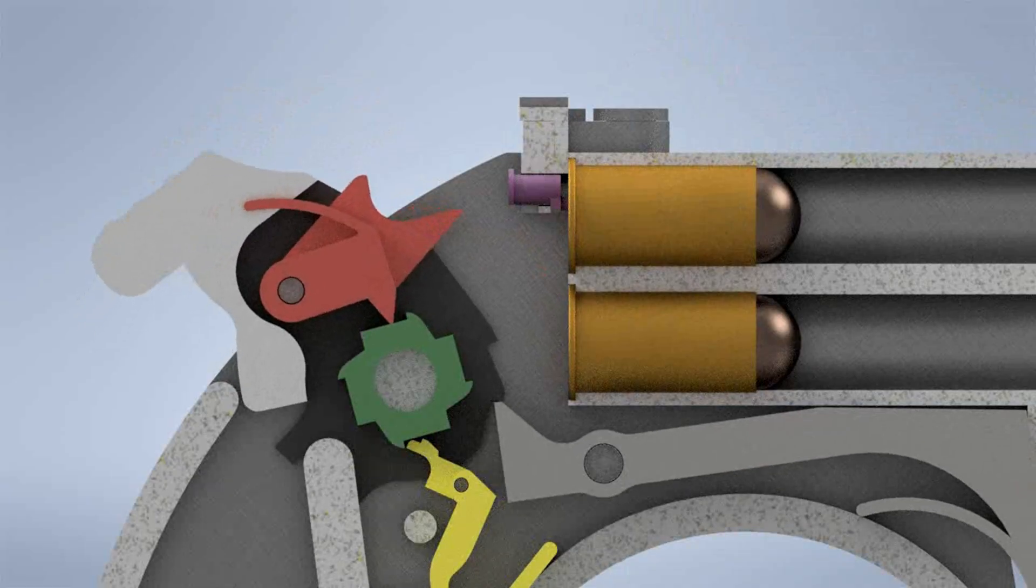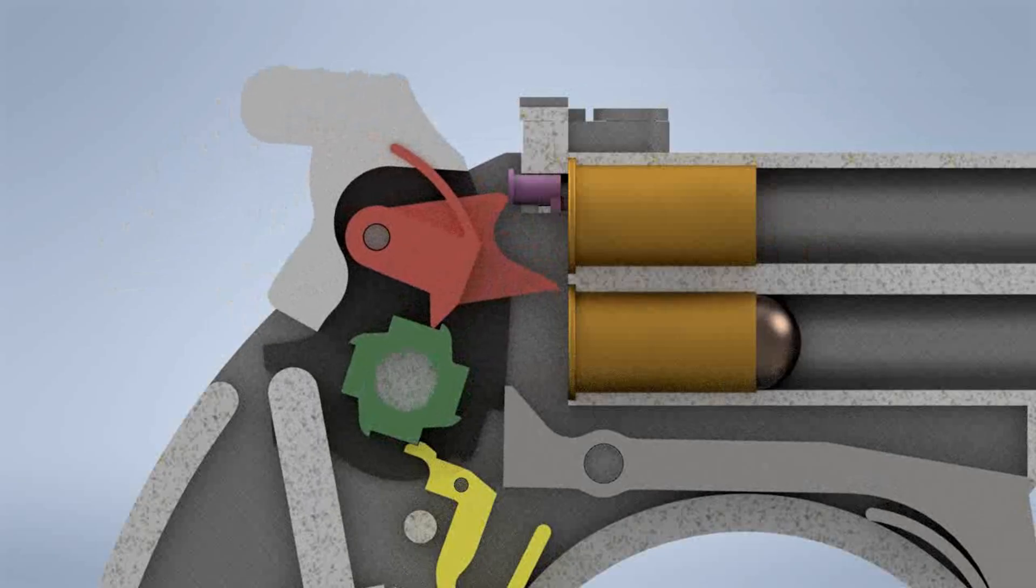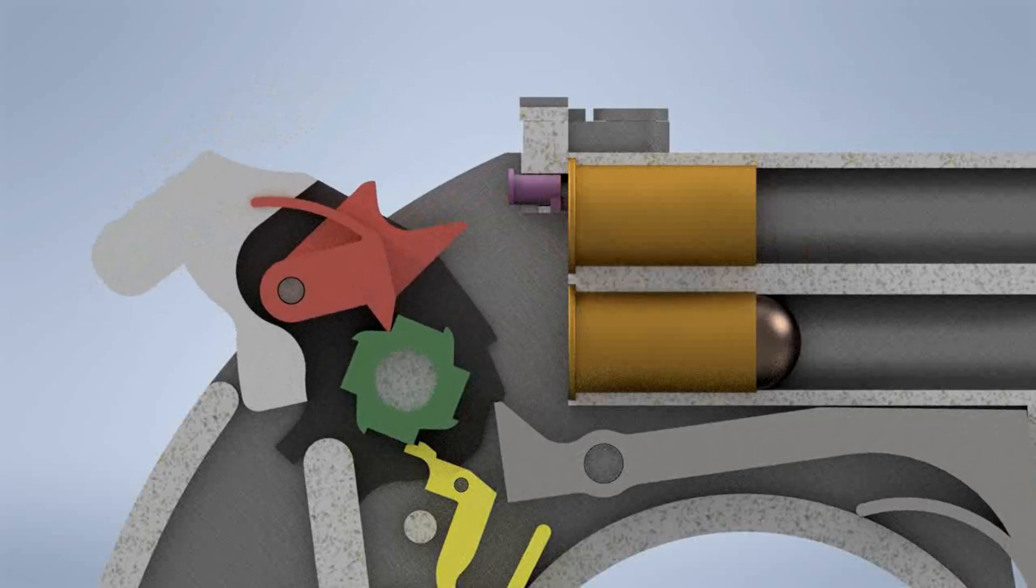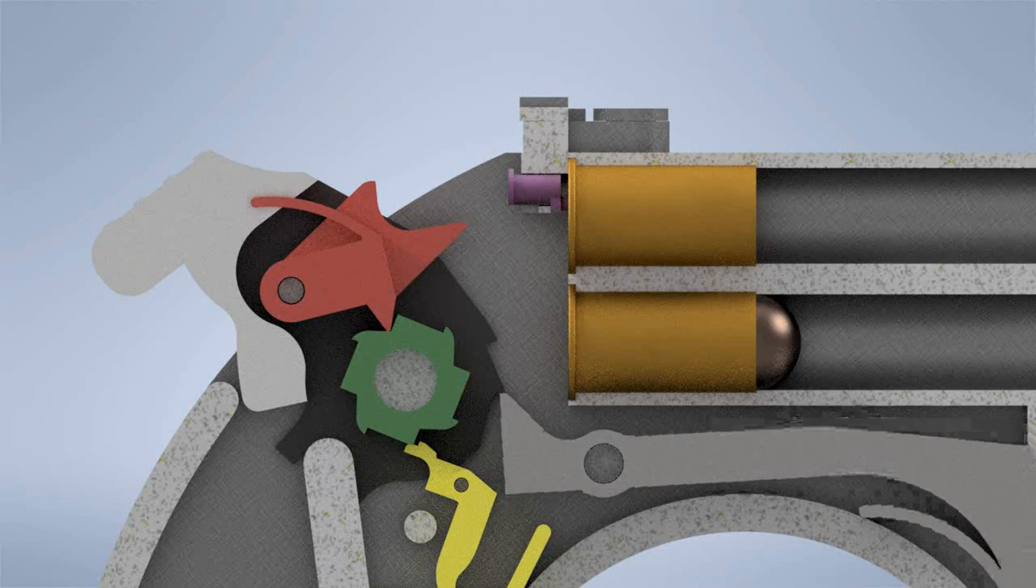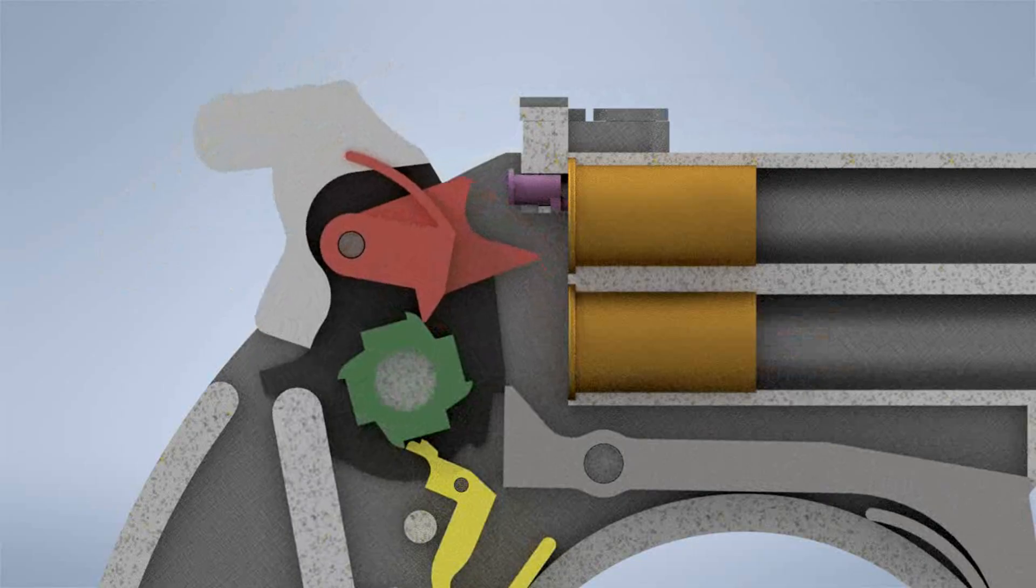When the hammer falls, the firing pin either strikes the purple transfer pin to fire the upper barrel, or makes direct contact with the bullet in the lower barrel. The yellow piece ensures the ratchet only moves in one direction, keeping the cycle consistent.